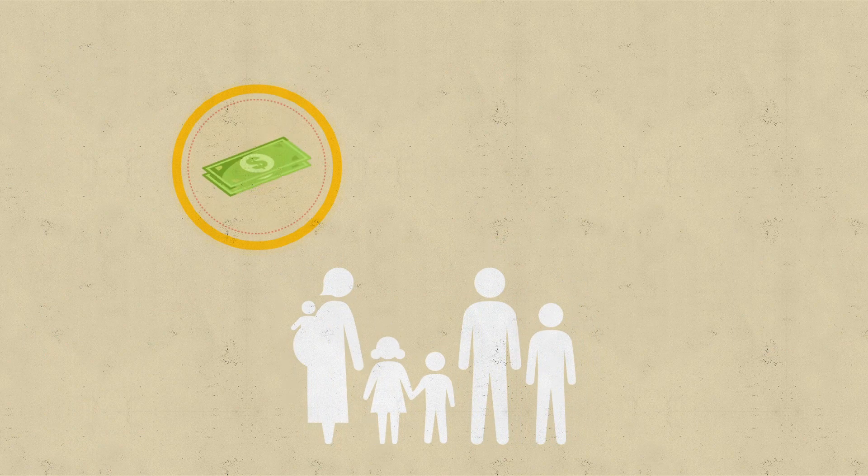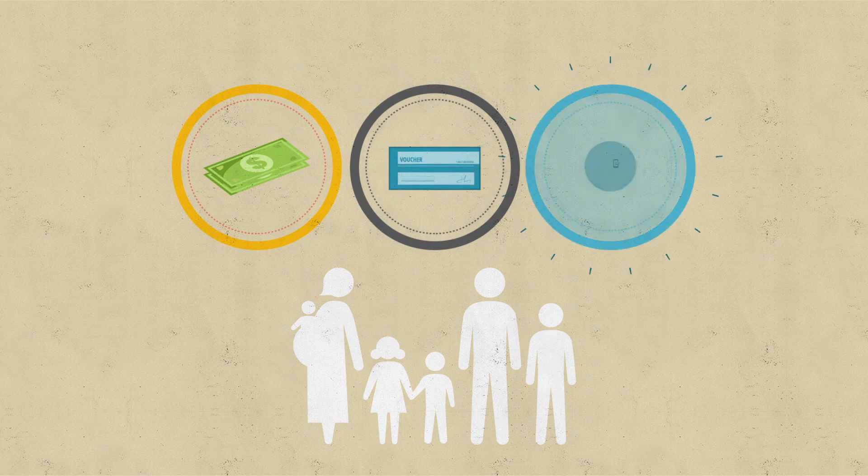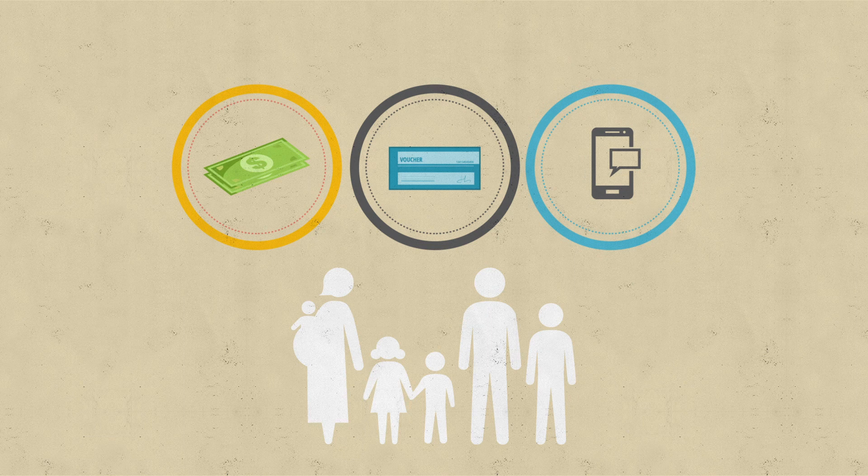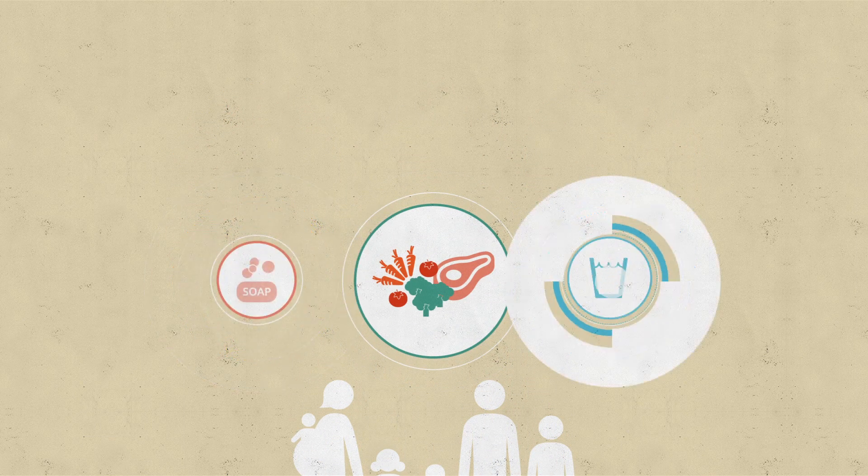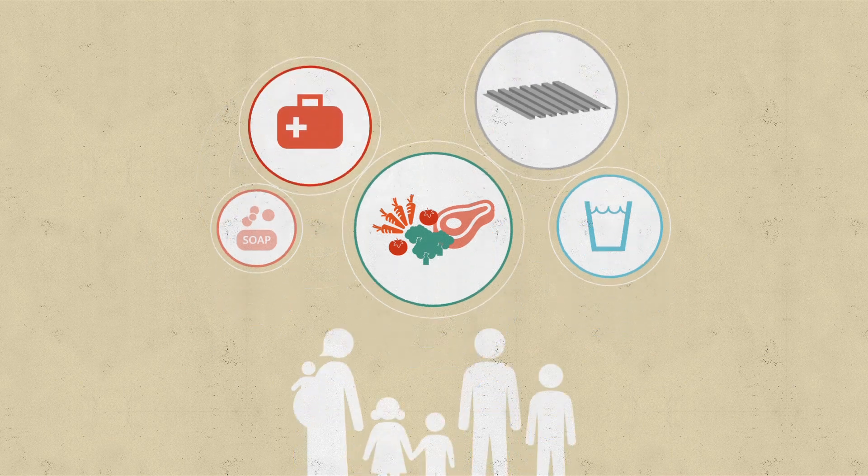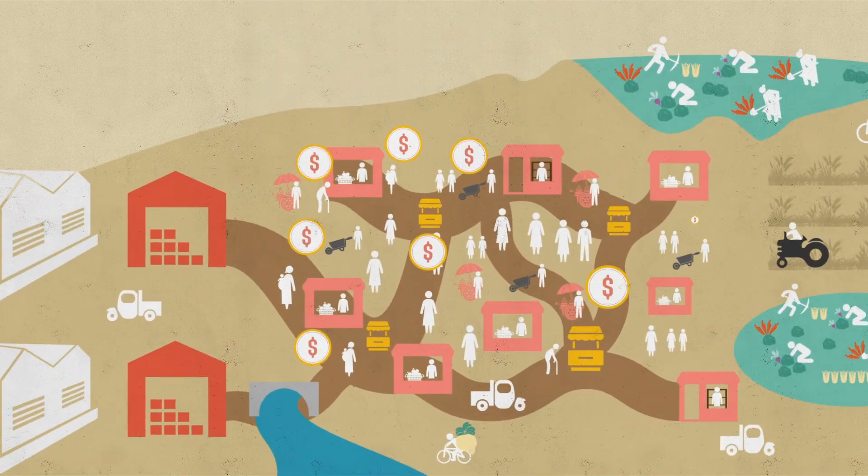Where markets are functioning after a crisis, giving cash or vouchers can be an effective tool to get assistance to beneficiaries. For all kinds of things, like food, household items, water, shelter and even medicines. And this can boost local markets, increasing trade.